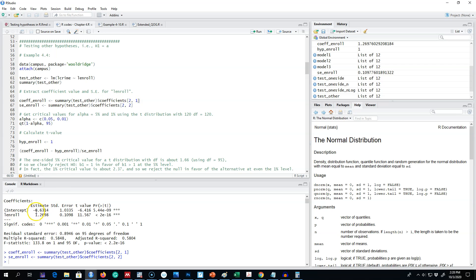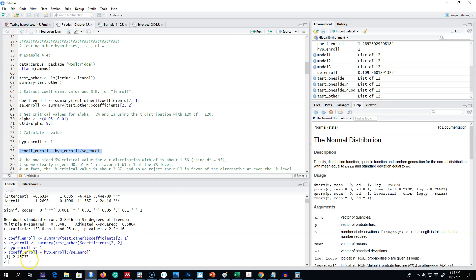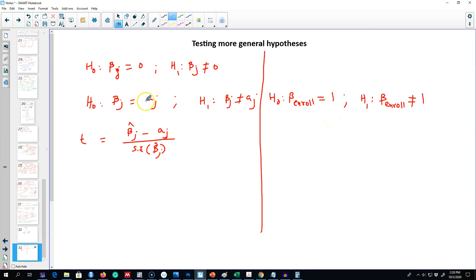This is the coefficient, and the standard error is the second column of second row. Our hypothesized value is 1. So this is our t value, 2.45. Our t calculated is 1.27 minus 1 over 0.11, which is approximately equal to 2.45.